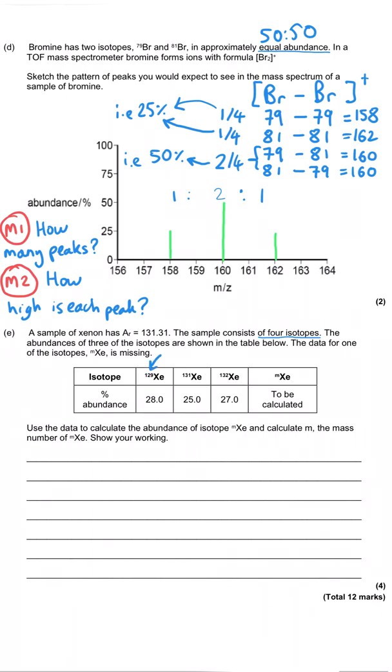So you can see we've got xenon-129, xenon-131, xenon-132. And we've got their abundances, 28 and 25 and 27. And our goal is to calculate the abundance of this isotope and to calculate the mass of that isotope.